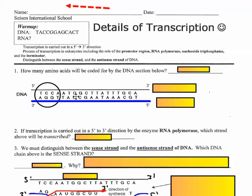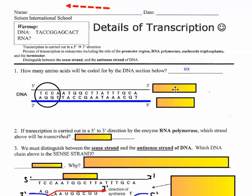Counting the bases: one, two, three, four, five, six, seven, eight, nine... twelve... fifteen... sixteen, seventeen, eighteen. There should be 18 bases there, divided by three bases per codon, so six amino acids would be coded for by this particular sequence.